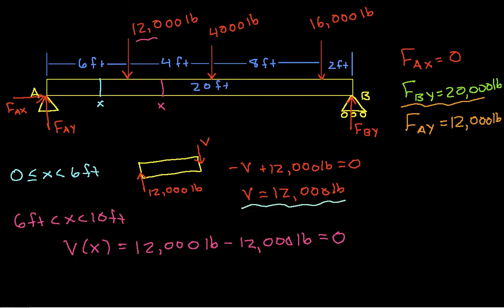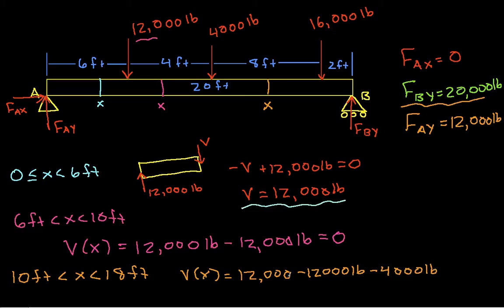If we look at the case where we're between 10 feet and 18 feet, we'll have V(X) equal to 12,000 pounds minus 12,000 pounds minus 4,000 pounds, and this gives us minus 4,000 pounds.